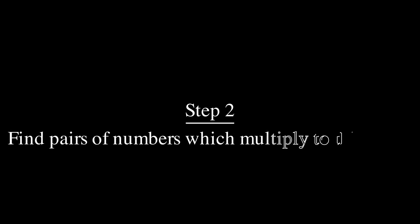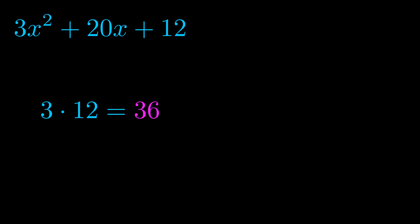Step two is to try to find all of the pairs which multiply to this number. Now it turns out you don't really need to find all of them, but go ahead and write down as many numbers as you can that multiply to the magenta value for now. Pause the video and resume when you're ready to continue.